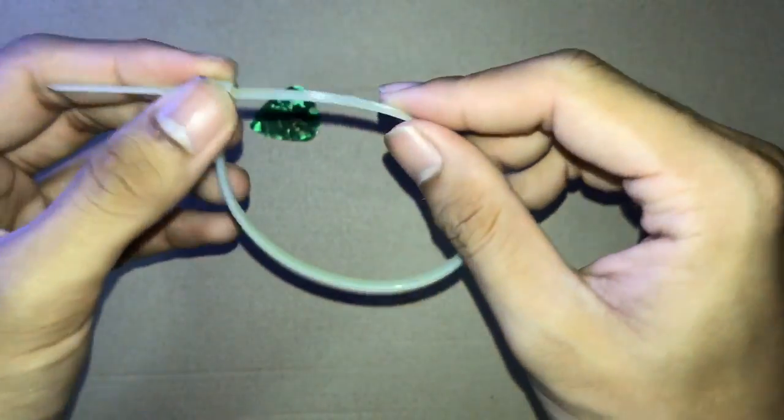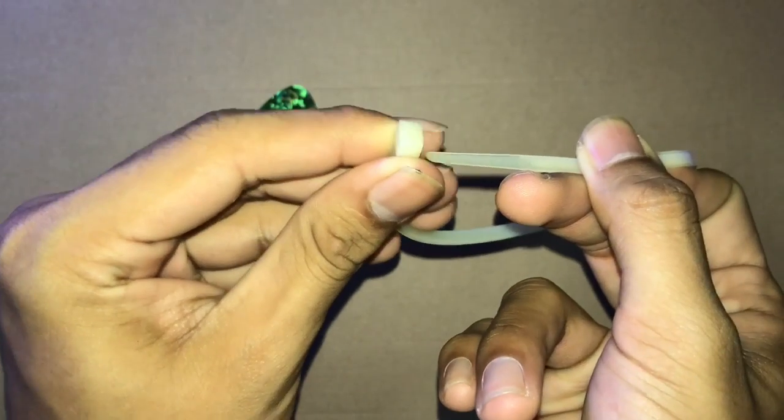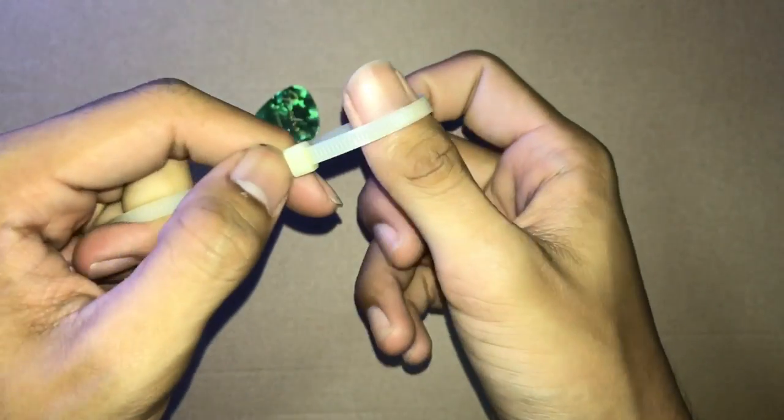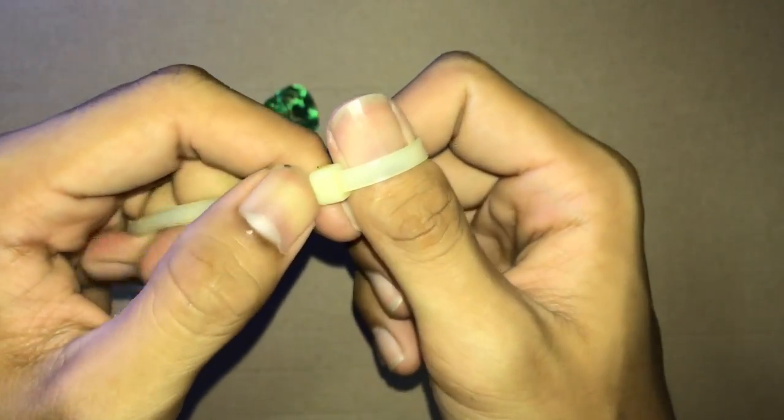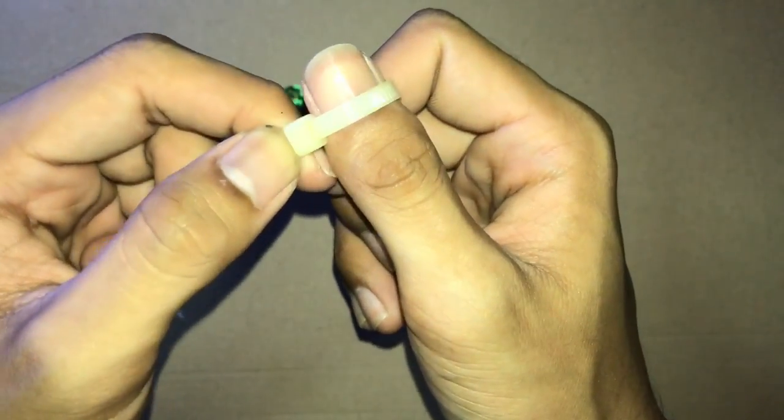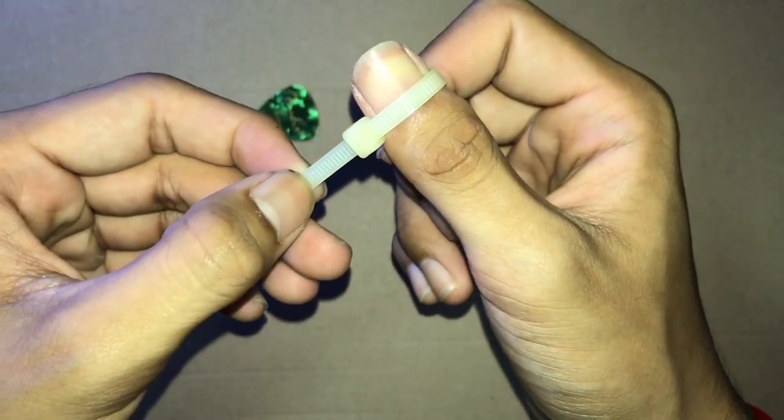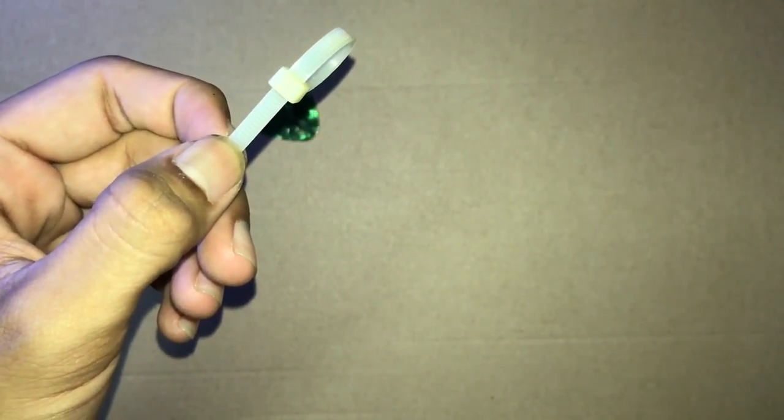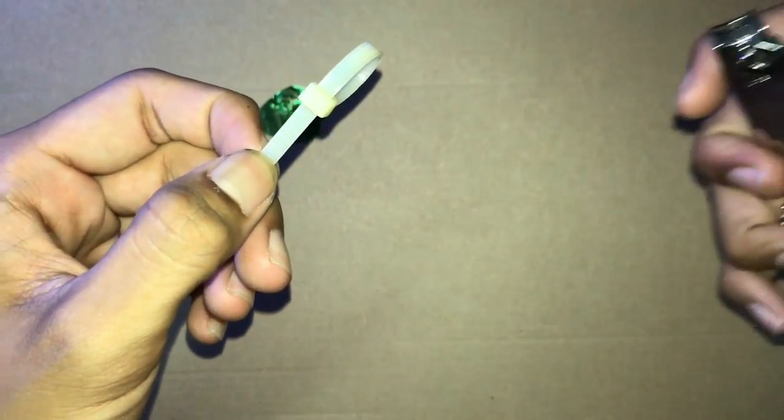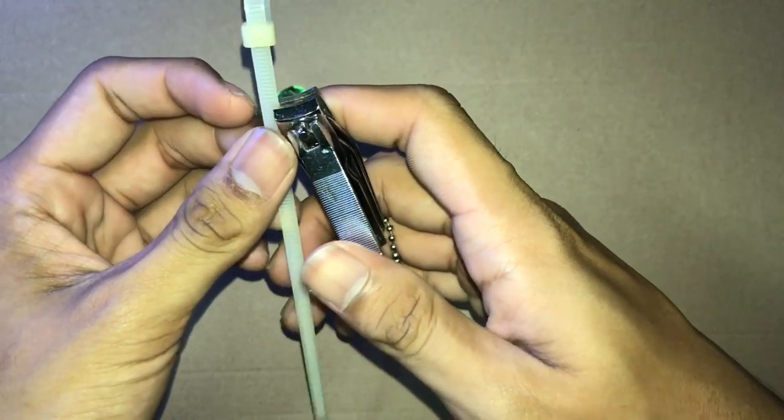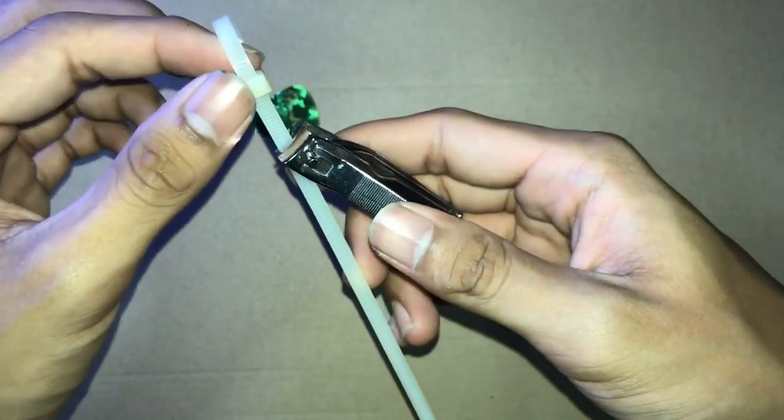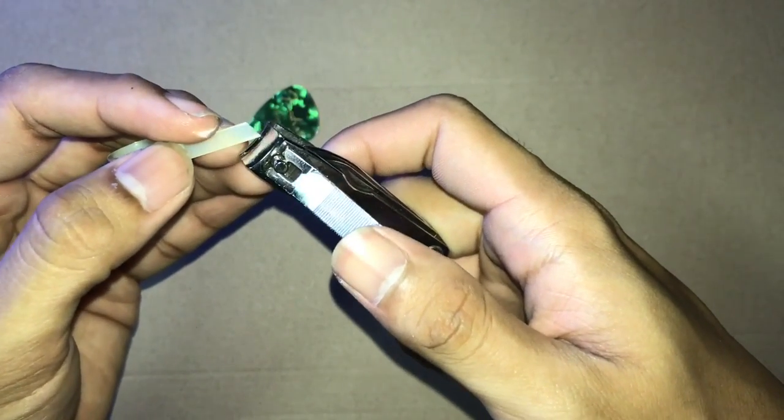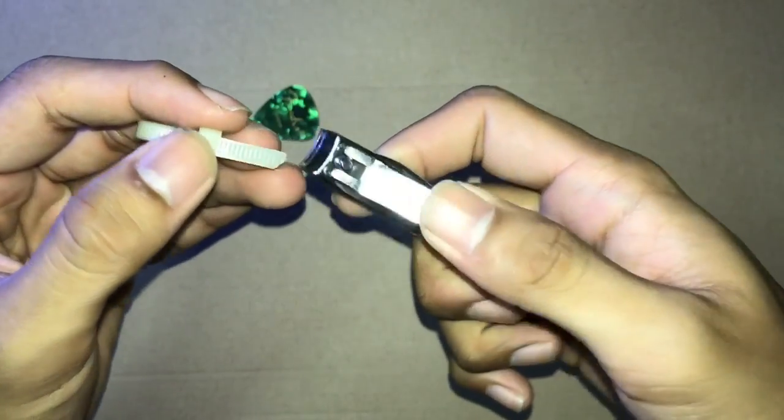The life hack is you just put it this way and make sure it fits your finger. This is the size of my thumb, so I should probably cut it about here. I don't like using my scissors because it's hard to cut, so I just use a nail cutter. This is great for cutting hard objects.